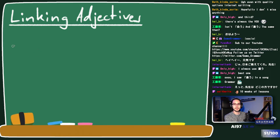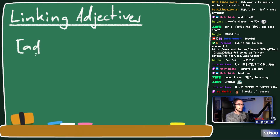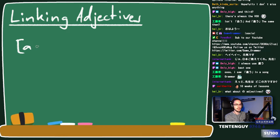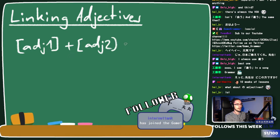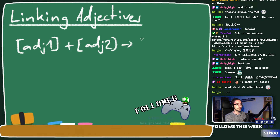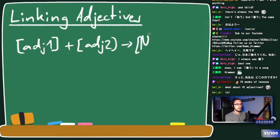So, linking adjectives - what do we mean by that? If you want to say something is big, you just say it's big. If you want to say something is green, you just say it's green. But how do you say it's two things? If you have two adjectives and you want to combine them together and have both of them apply to a noun, how do we deal with that?